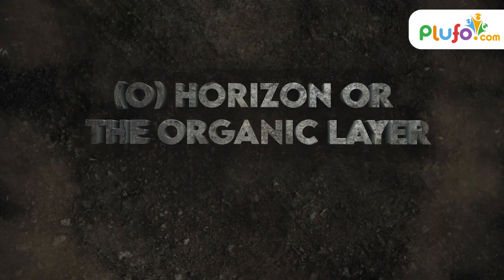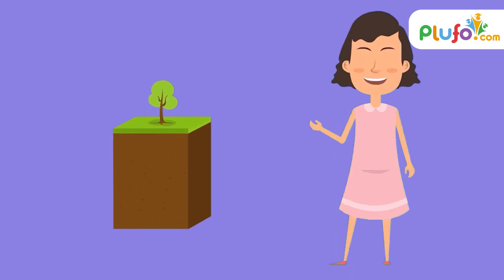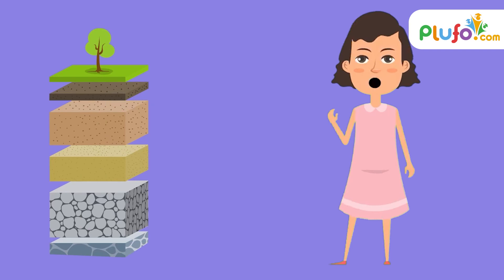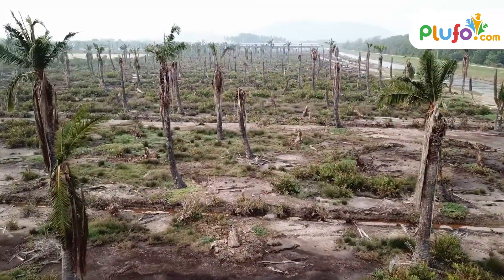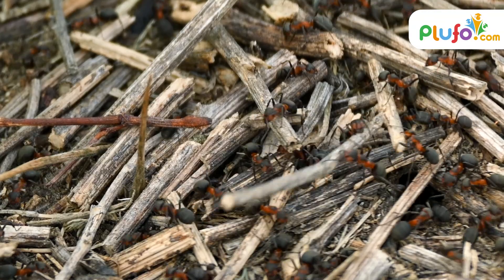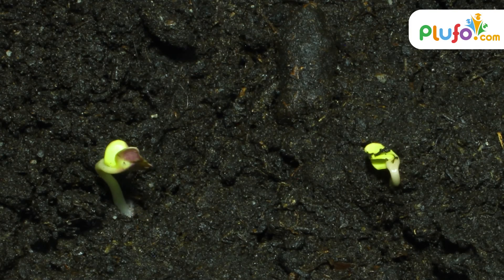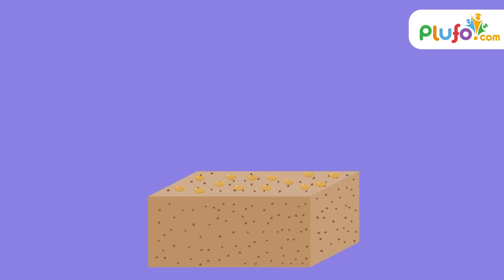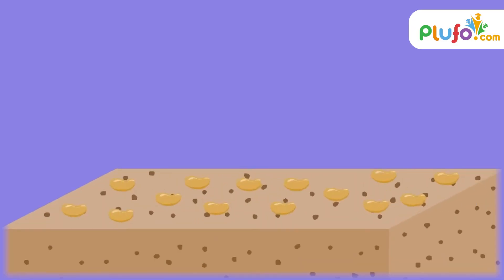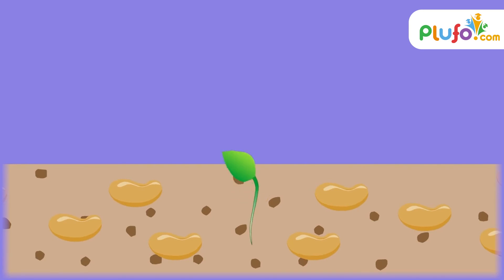The topmost layer is called the O-horizon, also known as the organic layer. It is a very thick layer rich in organic contents such as grass, dead leaves, twigs, surface organisms, and other decomposed organic components. This layer can be found in shades of brown, mostly dark brown, due to the presence of natural and organic materials.